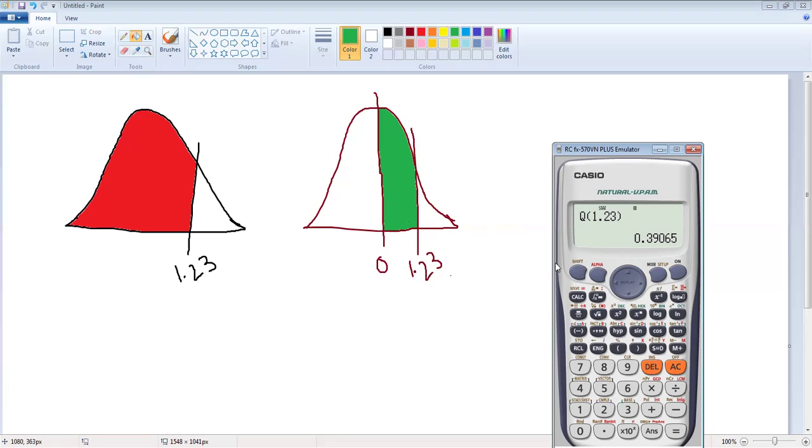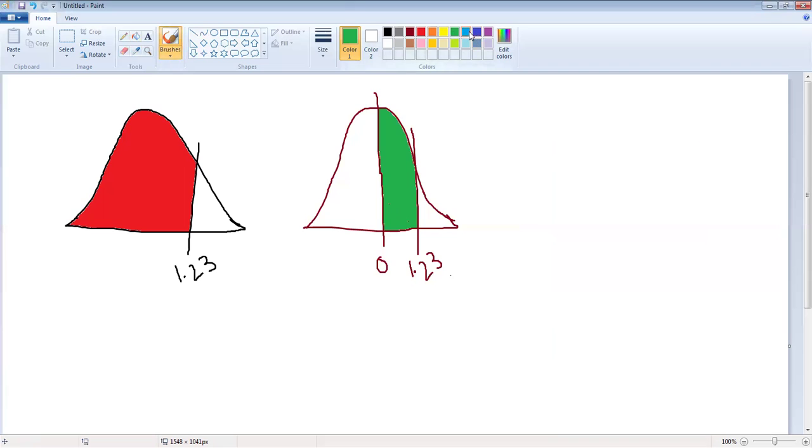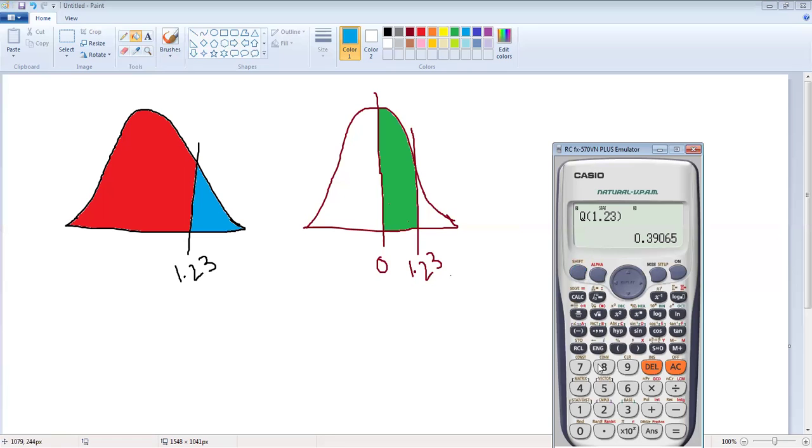Similarly, the third is R. What does that give you? R will give you this blue probability. So if you select from distribution, you select R and you write the same value, which is 1.23, it gives you the probability on the right-hand side, which is 0.1094 or 0.1095.